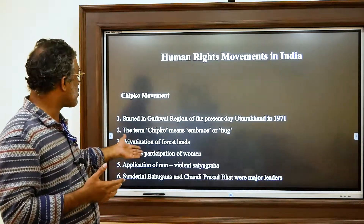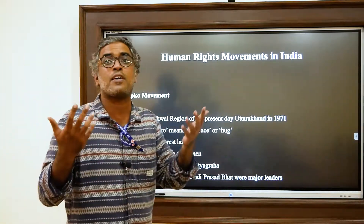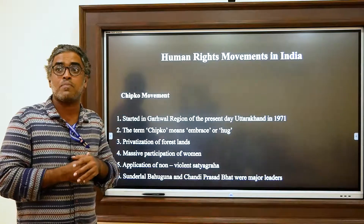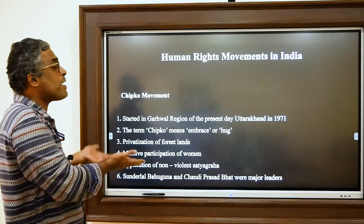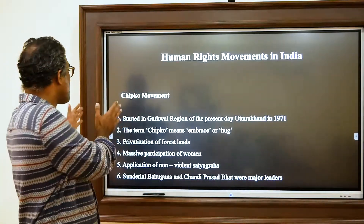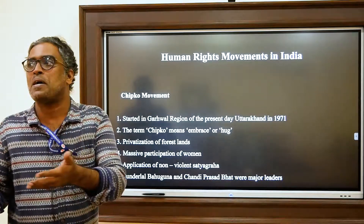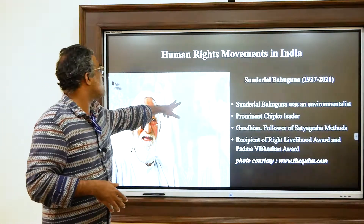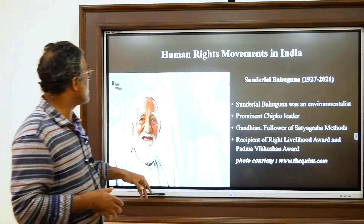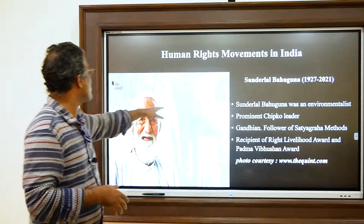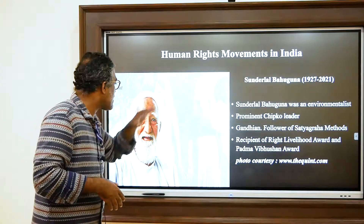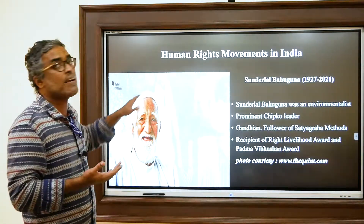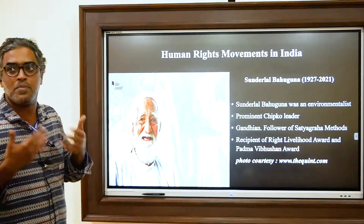They adopted the non-violent Satyagraha method first introduced in India by Gandhi during the independence movement. Bahuguna, a Gandhian and freedom fighter, applied Gandhian methods in this struggle. Every time loggers arrived to cut trees, the women would stand and embrace the trees — hugging them so the loggers could not cut them without harming the women first. This made the companies withdraw from their mission.